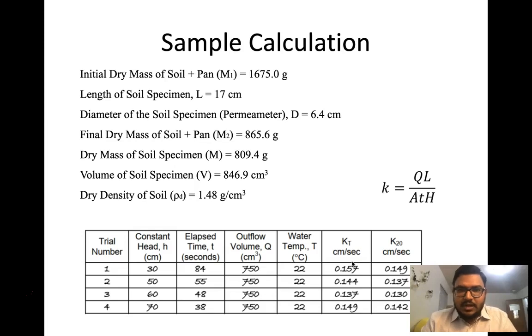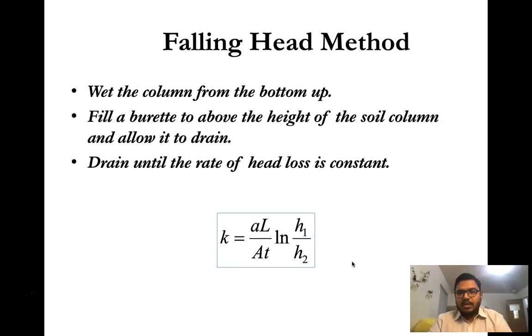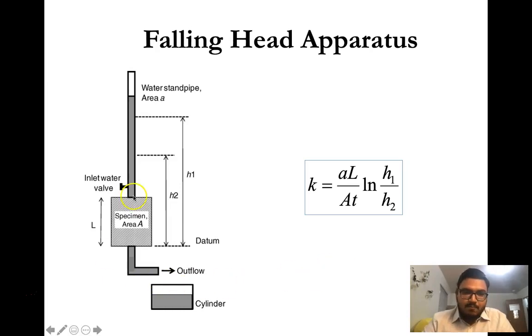That's the constant head permeability test. For the falling head permeability test, the setup is also quite similar, just the equation is different. For that test, the head now will vary, and in that case we don't need to measure the outflow, just we need to measure the time to get the head from h1 to h2.